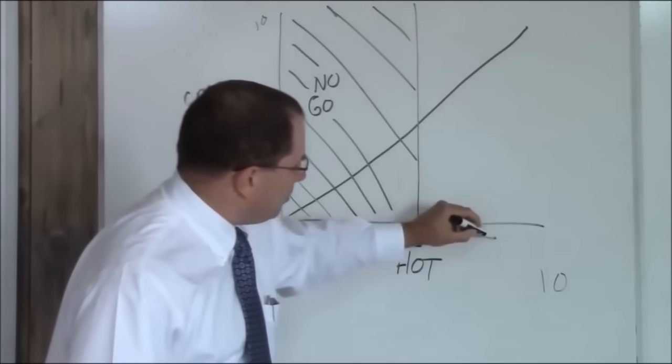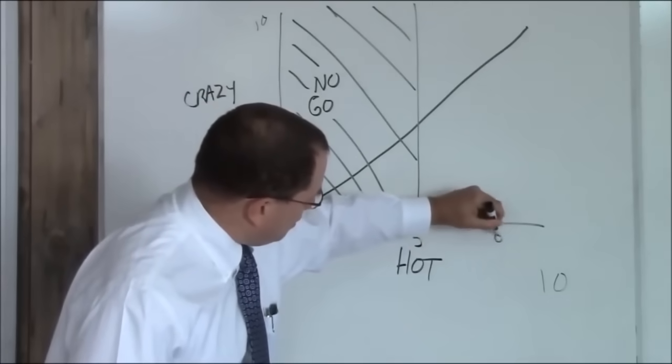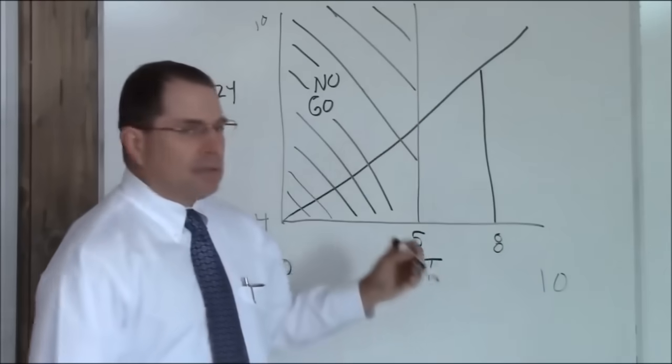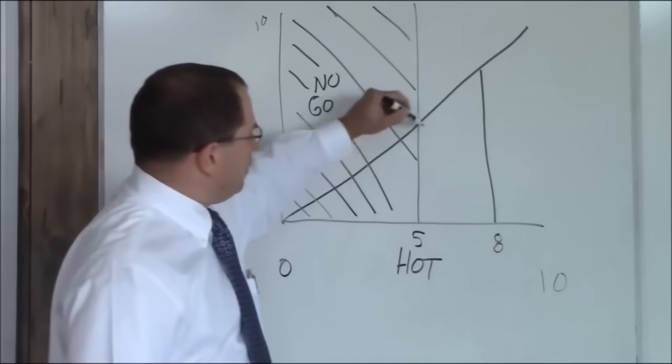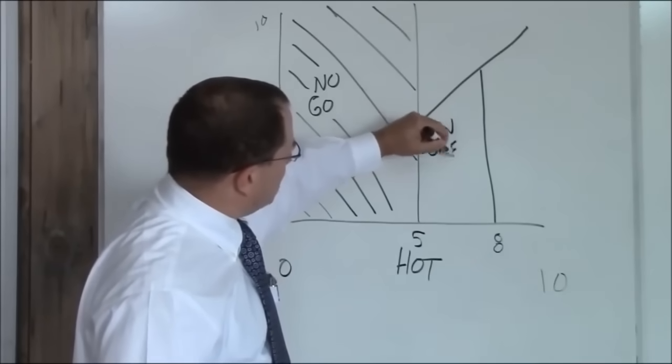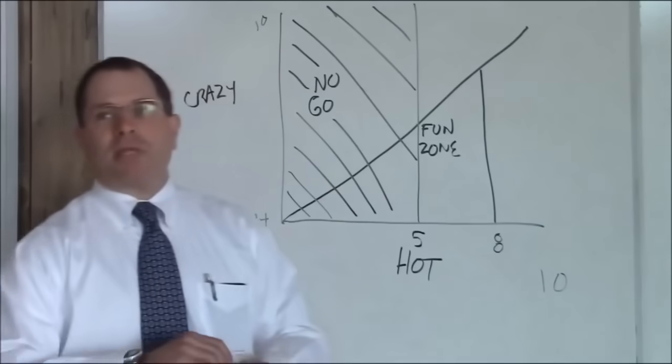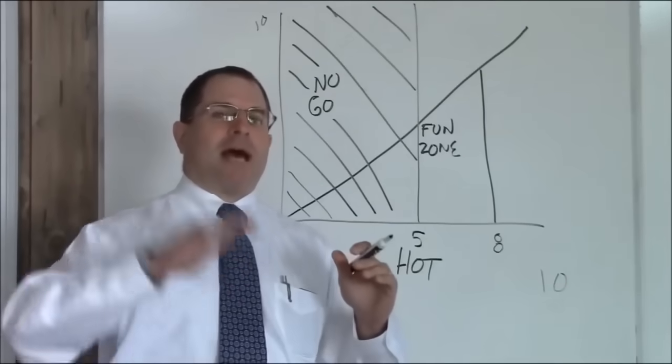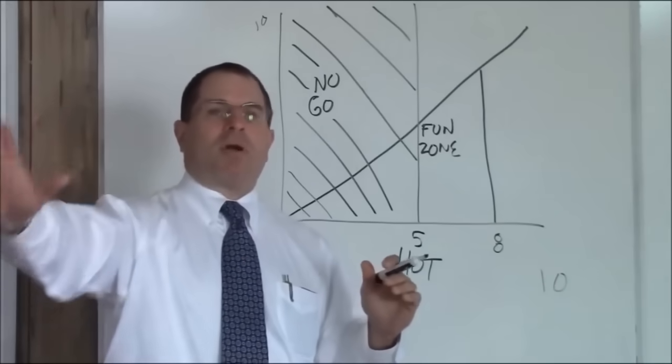Above a 5 and to about an 8, and below the crazy line, this is your fun zone. You can hang out here and meet these girls and spend time with them. That's your fun zone, but keep in mind, when you're in the fun zone, you want to move out of the fun zone to a more permanent location.